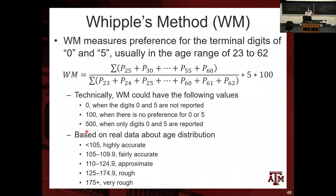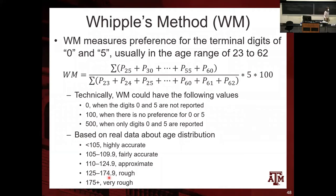Empirical data shows values don't actually reach those extremes. Demographers use this scale: a result below 105 means the data is highly accurate; 105 to 109.9 is fairly accurate; 110 to 124 is approximate; 125 to 175 is rough; and 175 or above means the information about age is very rough.